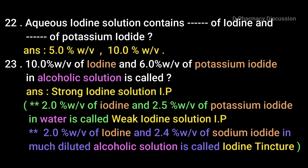Aqueous iodine solution contains 5% w/v of iodine and 10% w/v of potassium iodide. Strong iodine solution IP contains 10% w/v of iodine and 6% w/v of potassium iodide in alcoholic solution. Weak iodine solution IP contains 2% w/v of iodine and 2.5% w/v of potassium iodide in water. Iodine tincture contains 2% w/v of iodine and 2.5% w/v of sodium iodide in diluted alcoholic solution.